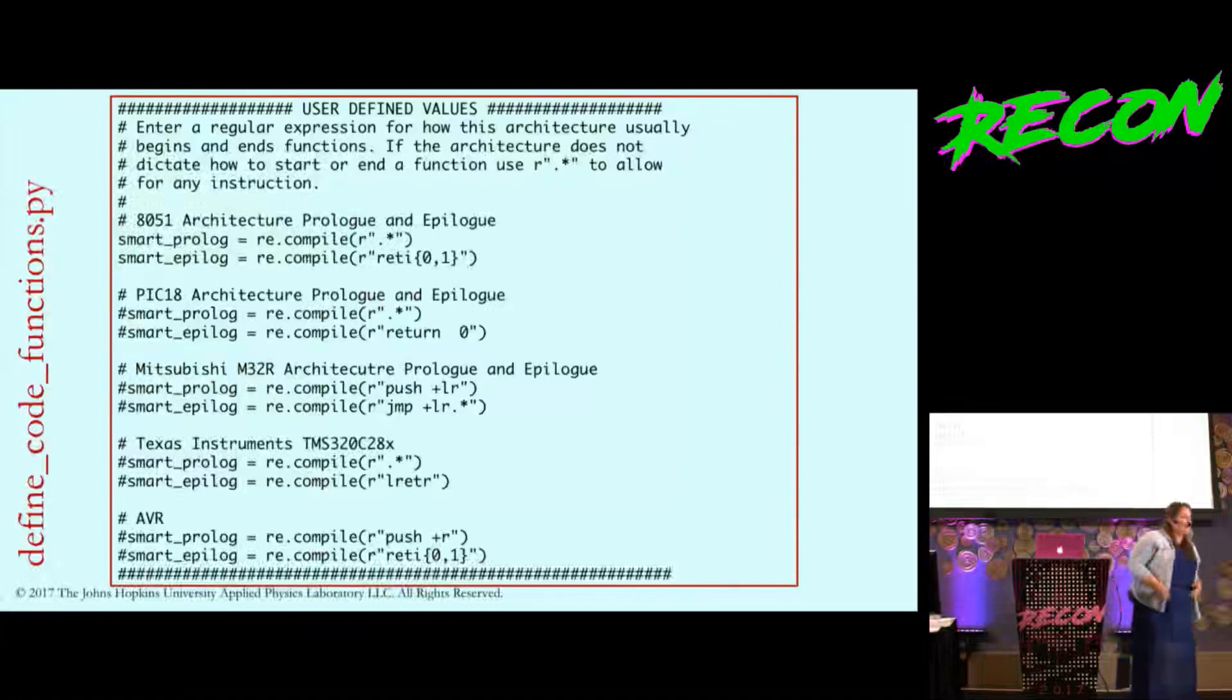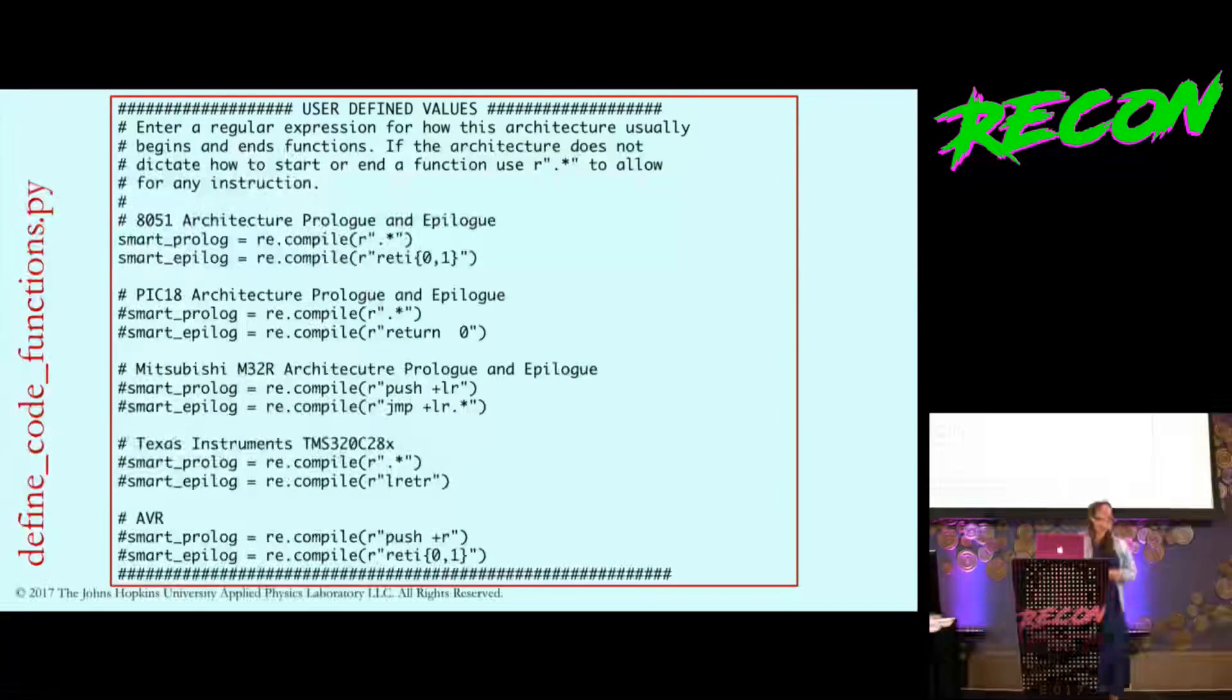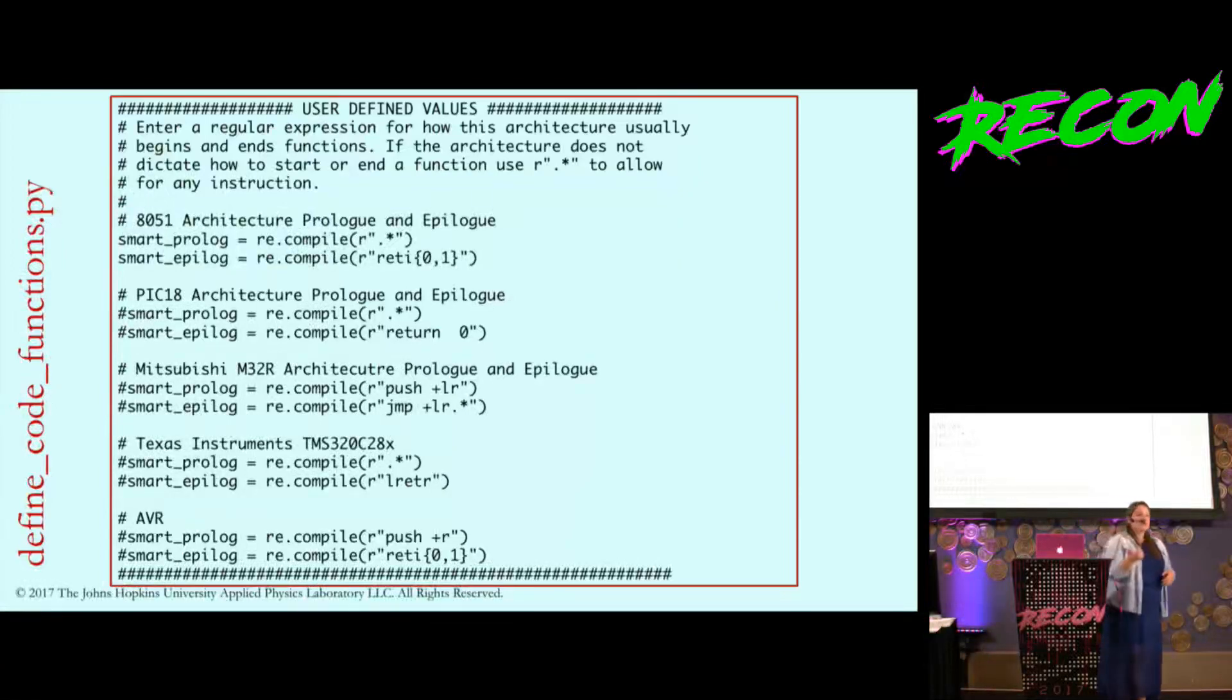This is an example of how we do this architecture agnostic using regular expressions. Here are a couple different architectures I've included and tested. All we have to do is look at what is generally the first instruction for functions in this architecture or the last instruction. For 8051, PIC 18, and Texas Instruments chip, I have a statement which means they don't have a consistent entry instruction, but all of them do have a consistent exit or return statement you can use to get better boundaries.